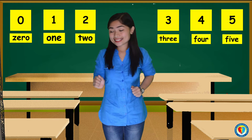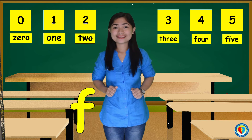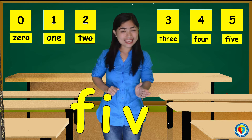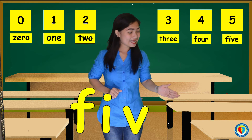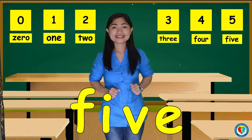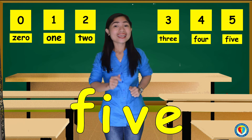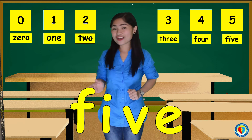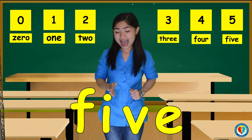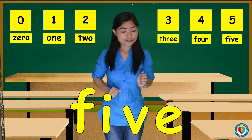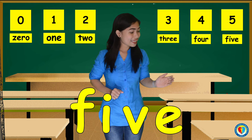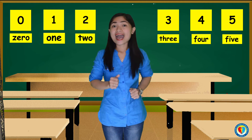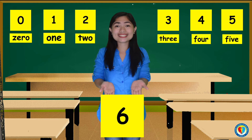For the number 5, it's F, I, V, E. Five. Can you repeat after me, kids? F, I, V, E. Five.